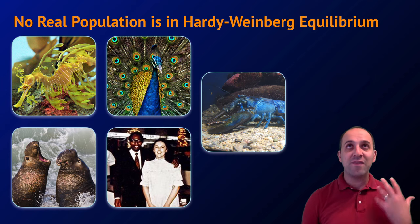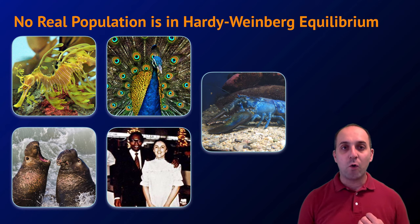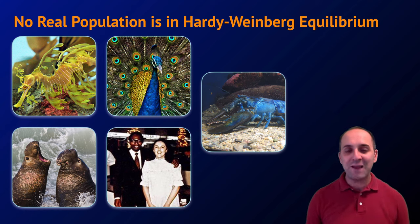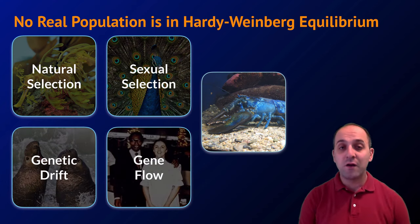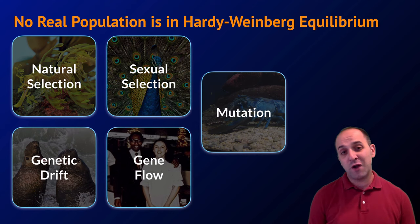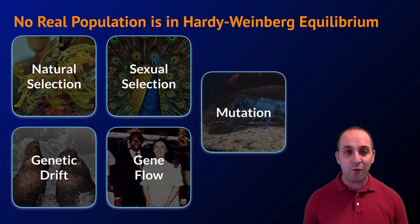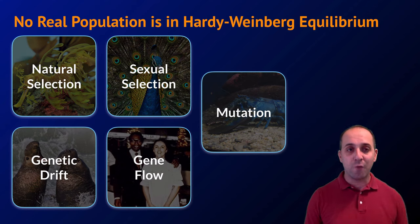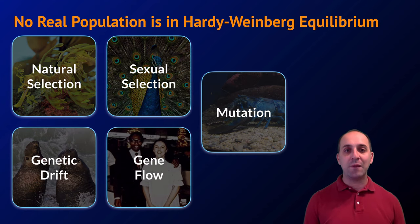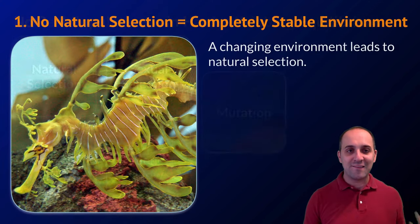To think about what would have to happen for a population to be in Hardy-Weinberg equilibrium, we have to consider the things that make an actual population evolve: natural selection, sexual selection, genetic drift, gene flow, and mutations. Mutations are changes in the DNA. Since all these forces work in real populations, no real population can ever truly be in Hardy-Weinberg equilibrium.